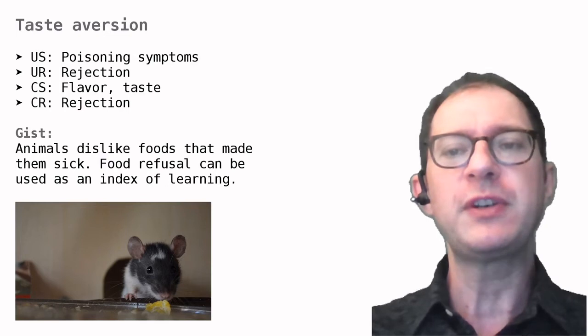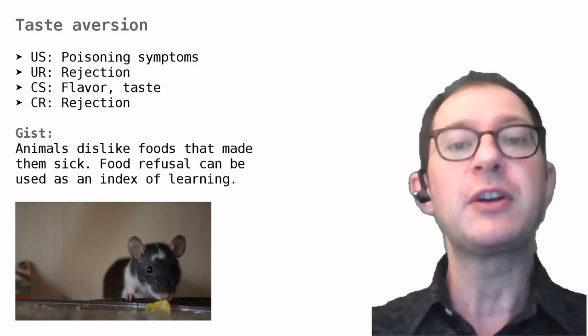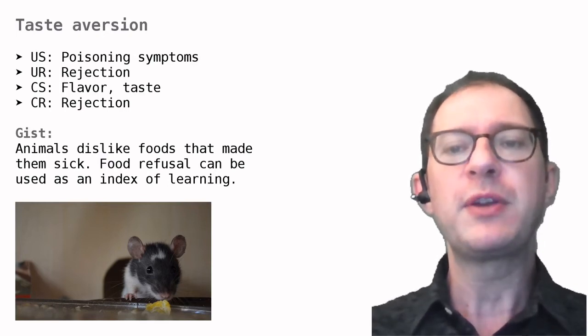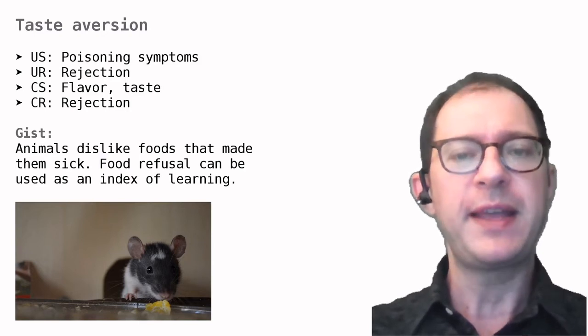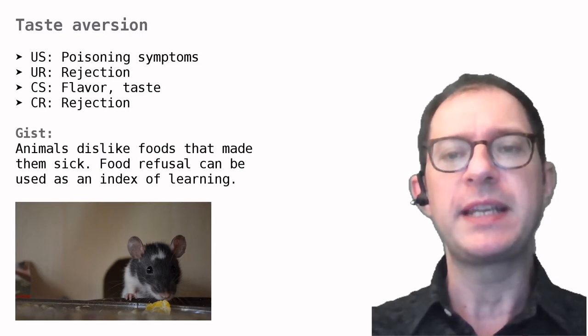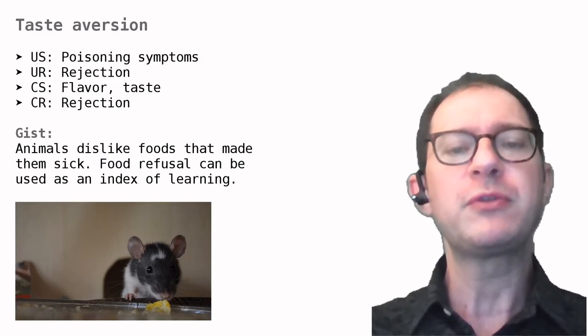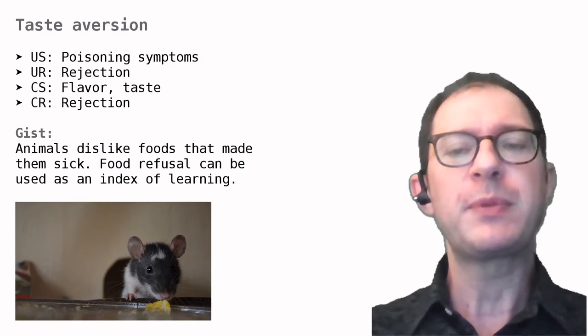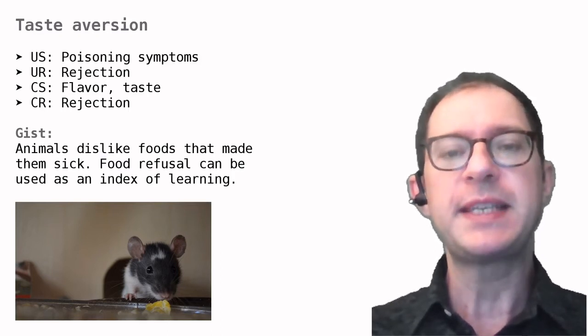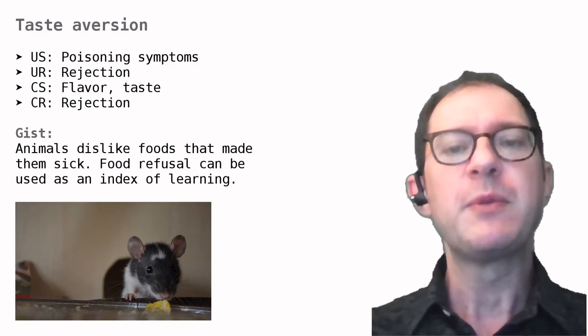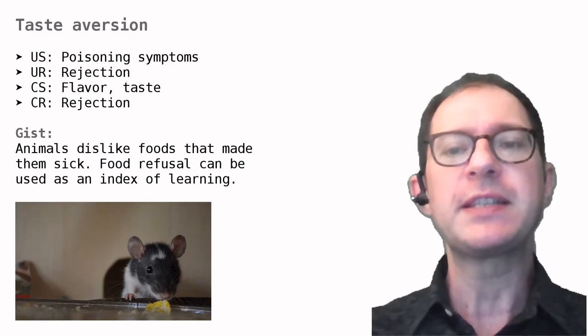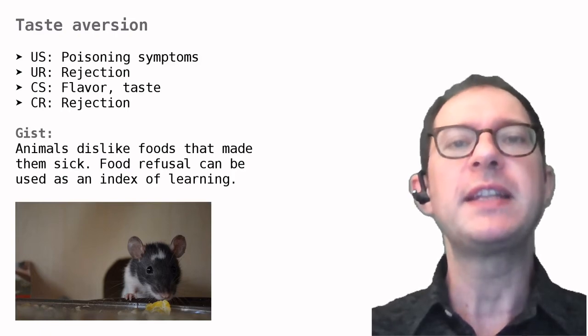Another feature of taste aversion learning is that it works across long time intervals. You can feed an animal something now and then make it sick many hours later and it will develop an aversion to the food. In other Pavlovian preparations the interval between the CS and the US must be rather small for learning to happen. We will expand on these remarks in the lesson called Animals as Naive Detectives.